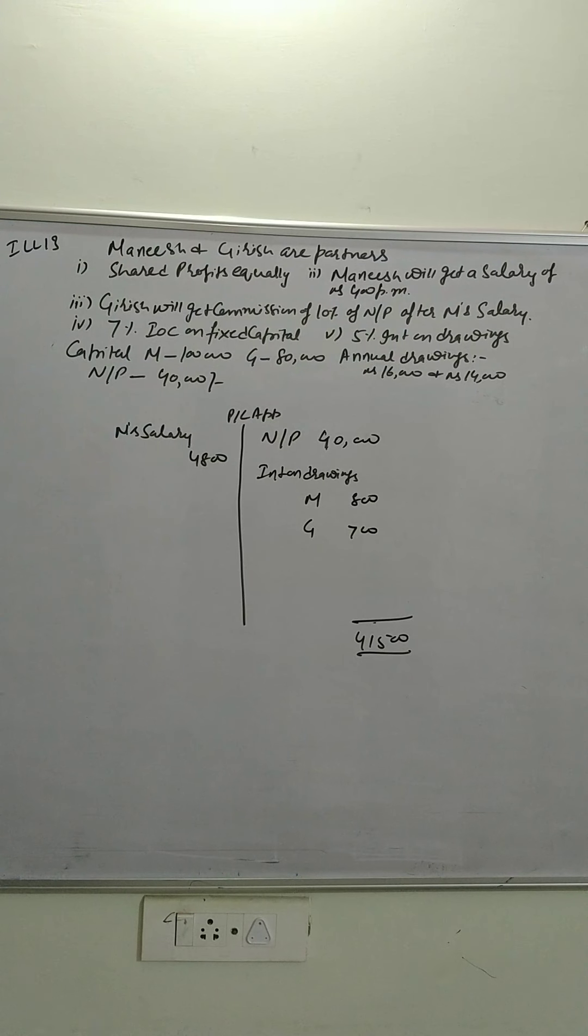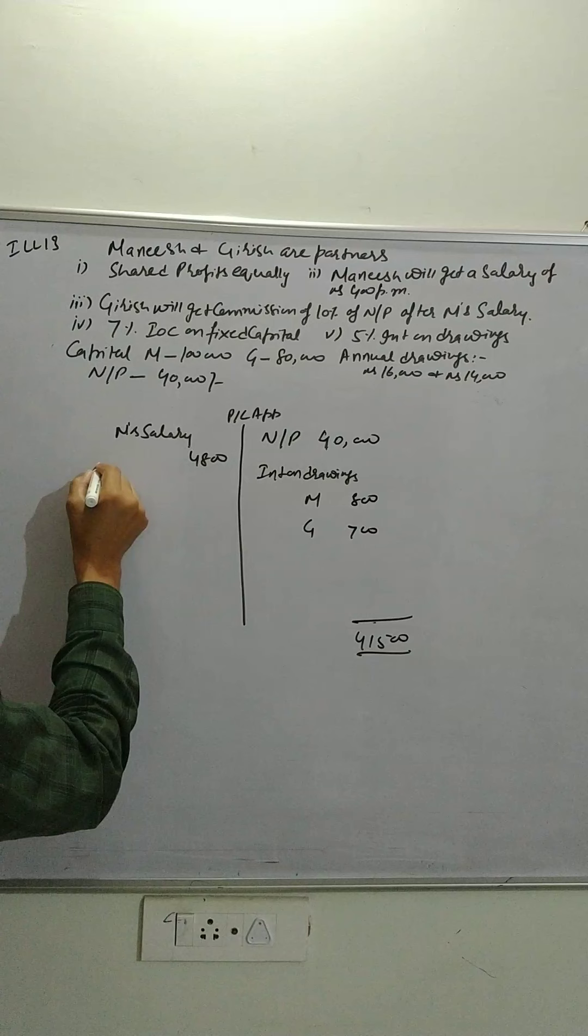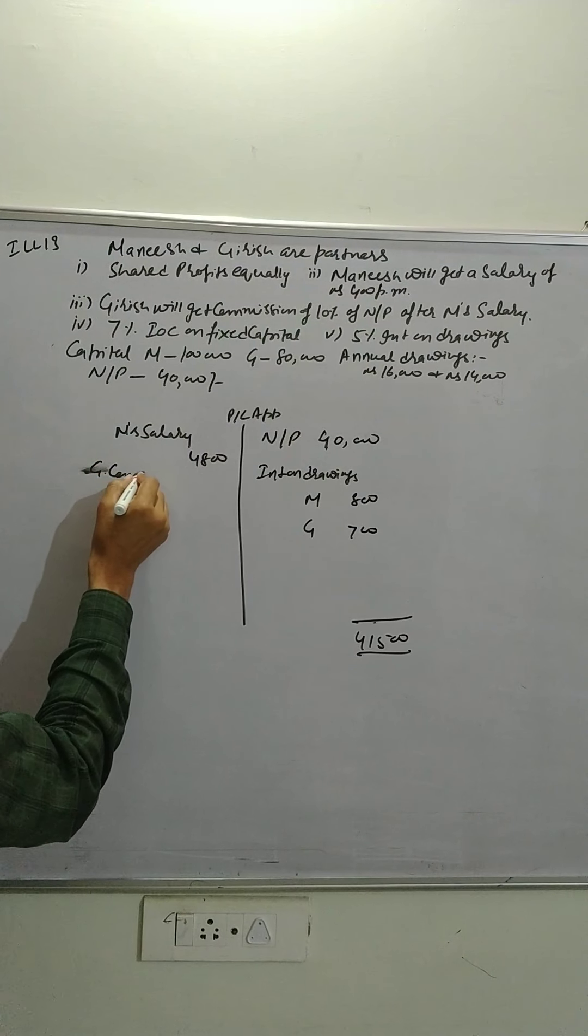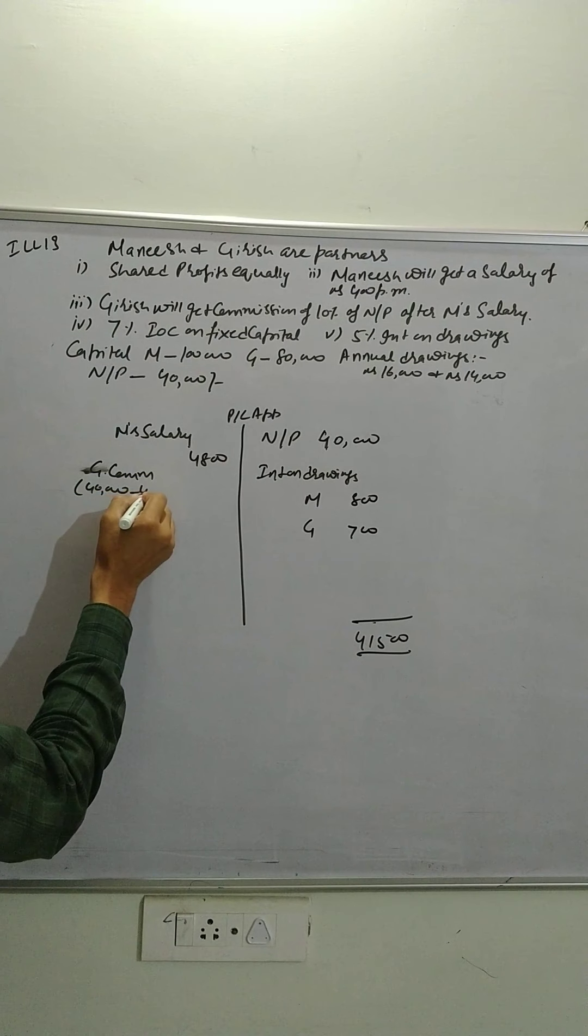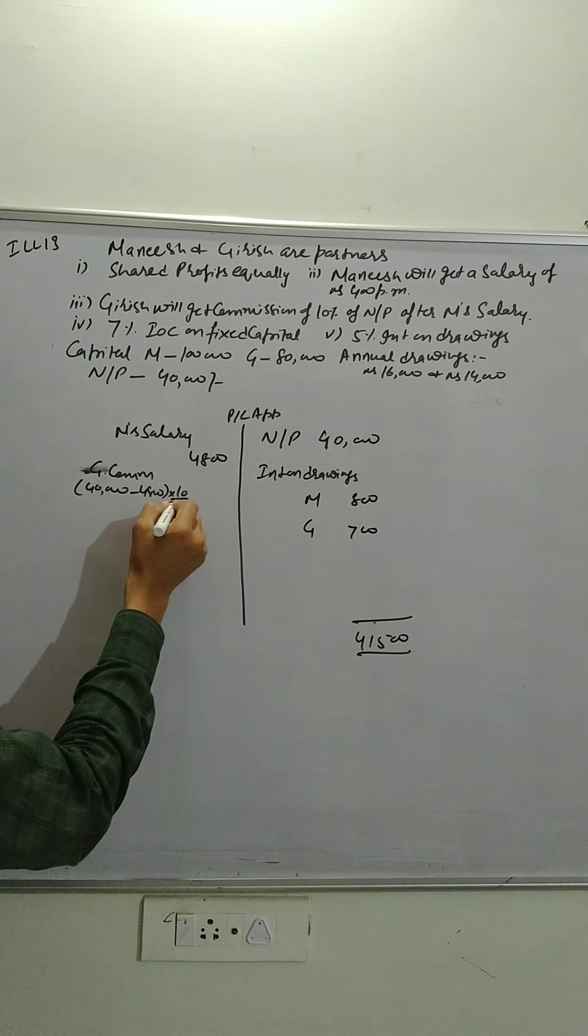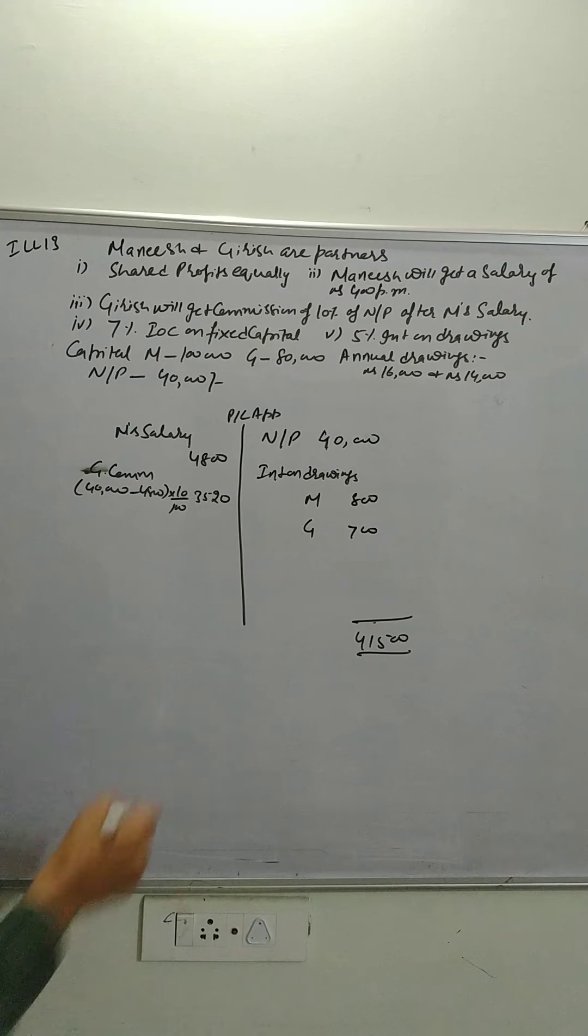Now Girish will get commission of 10% of net profit after M's salary. So that is here 10% of, so Girish commission is 40,000 minus 4,800 into 10%. That turns out to be 3,520.